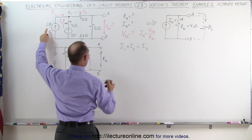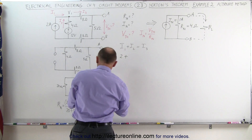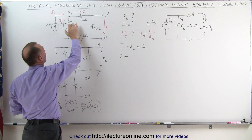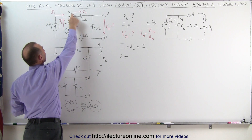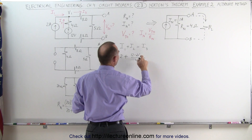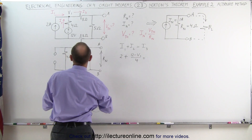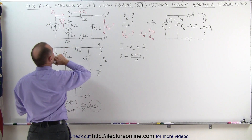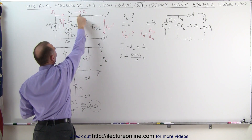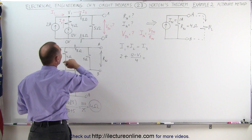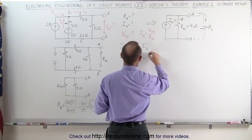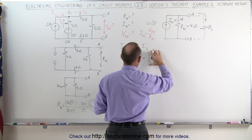I1 plus I2 — those are the two currents entering — equals I3, which is the current leaving. I1 is simply the 2 amp source. To find I2, that's the current through the 4 ohm resistor: we take the voltage difference and divide by the resistance, which would be (12 volts minus V1) divided by 4. Notice that the bottom node is 0 volts, so the current I3 equals V1 divided by 21 ohms, since the total resistance in that branch is 8 plus 8 plus 5, which is 21 ohms.